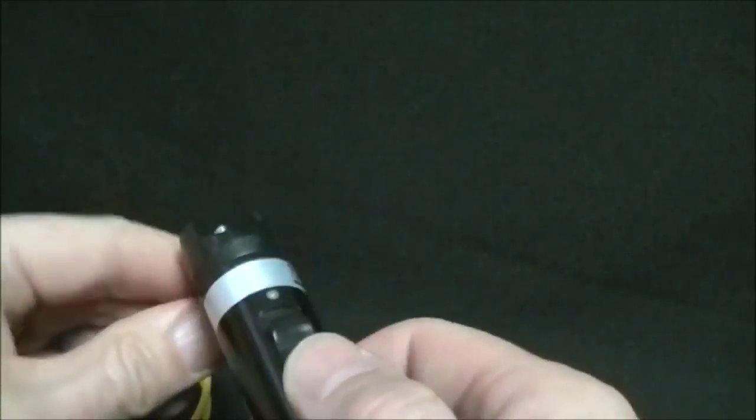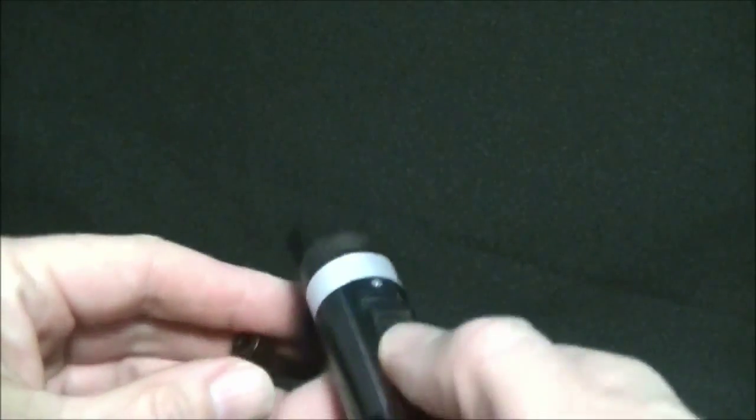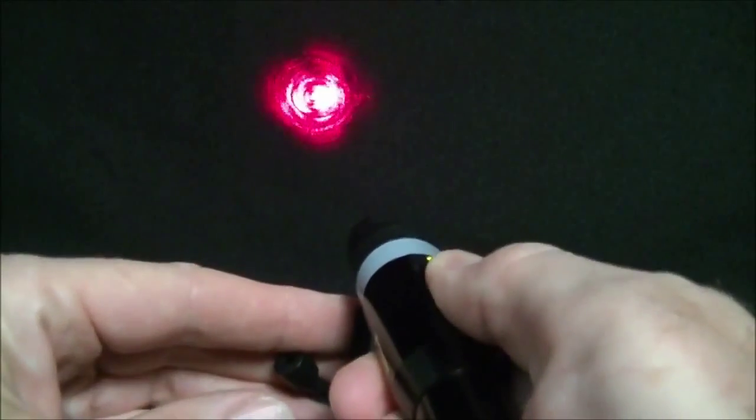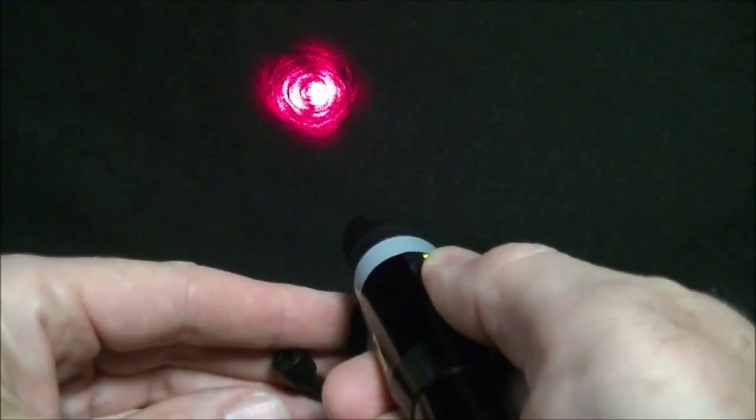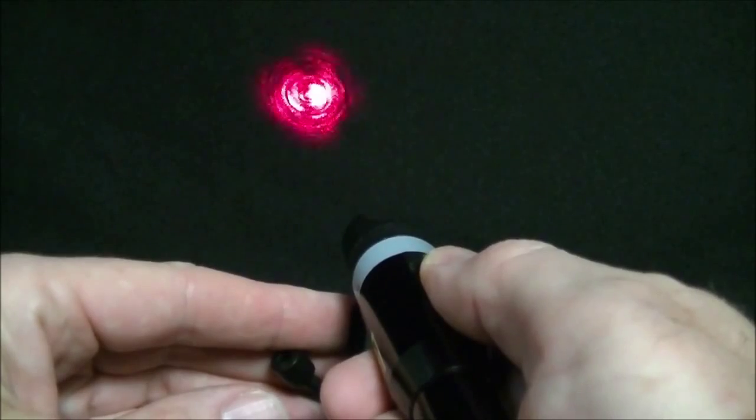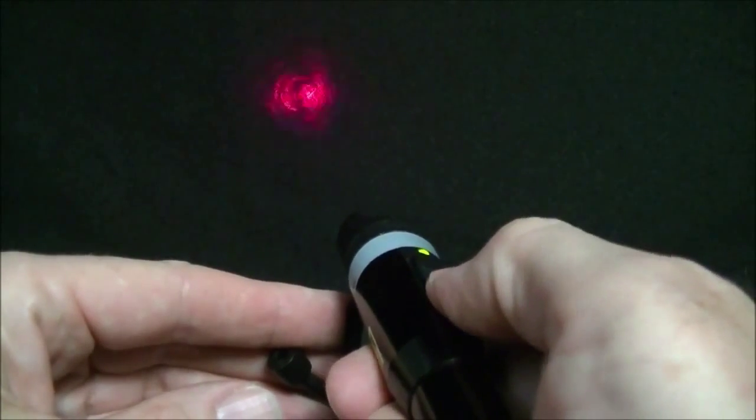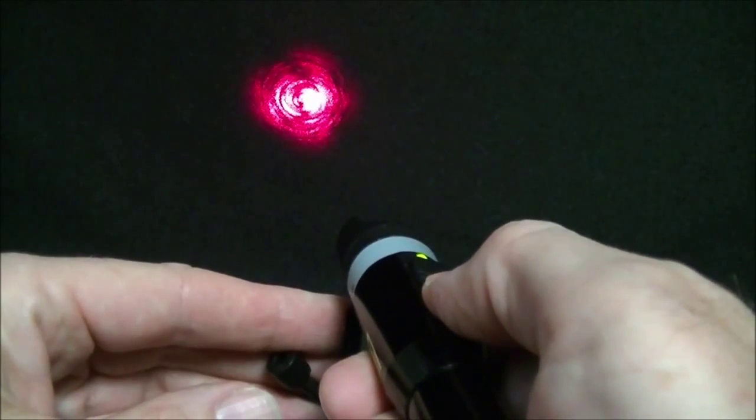The 180XL has two modes of operation. The first mode of operation is a 2Hz modulation and then there's a continuous wave CW mode.